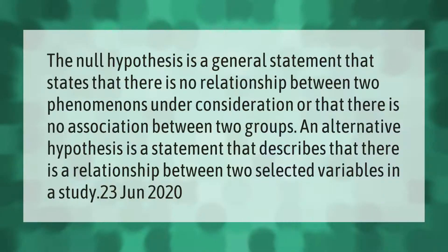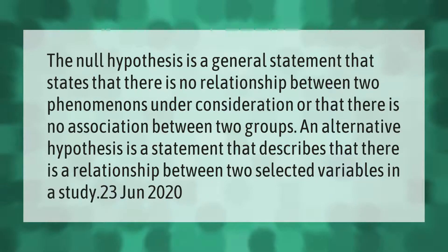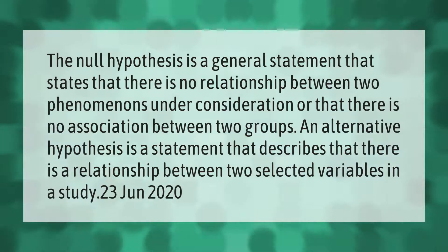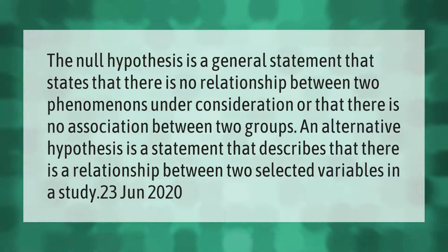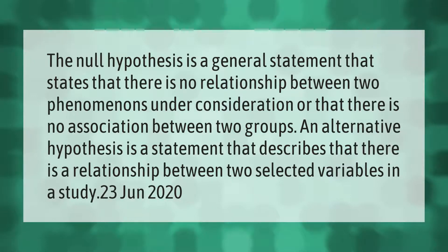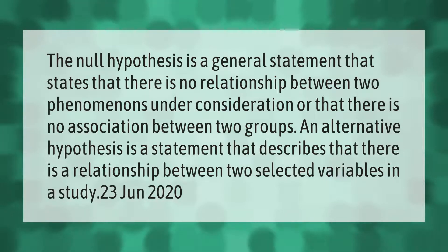The null hypothesis is a general statement that there is no relationship between two phenomena under consideration, or that there is no association between two groups. An alternative hypothesis is a statement that describes that there is a relationship between two selected variables in a study.